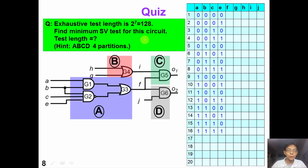Now it's time for a quiz. Given this circuit, the exhaustive test will require 2 to the power of 7, which is 128 test patterns. Please find a minimum segment verification test for this circuit and determine the test length. As a hint, we can test partition A exhaustively, which will require at least 16 test patterns. You can start with this table and work on the quiz.